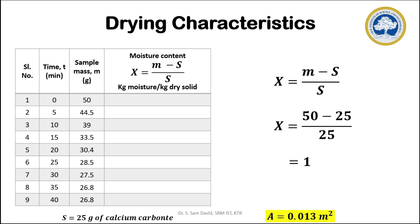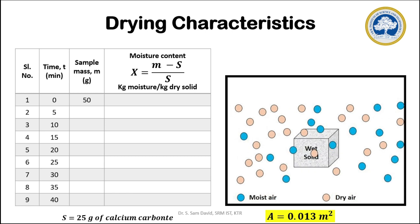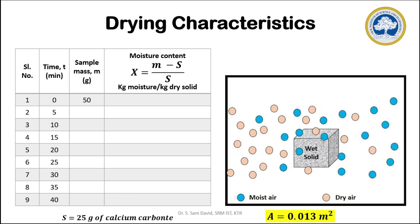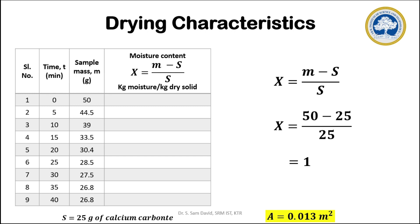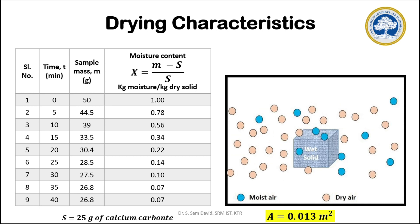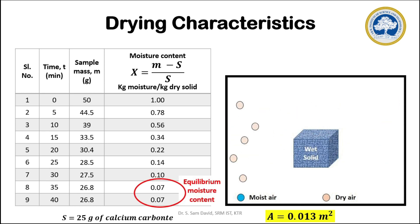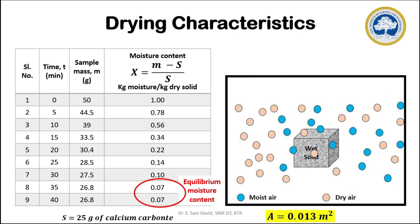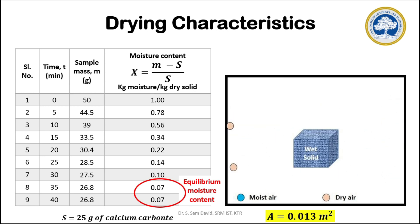The moisture content can be calculated using the formula (m − s) / s, where s is the mass of the dry sample. In this case, 25 grams of calcium carbonate is the dry solid. For the first reading, m equals 50 and s equals 25, giving a moisture content of 1. Similarly, moisture content is calculated for all time intervals. The moisture content at the 35th and 40th minutes is the same, indicating the equilibrium moisture content — no further water can be removed under the given operating conditions.